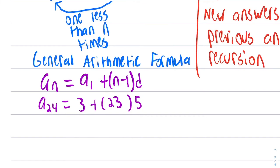And then we can simplify this. A24 will equal 3 plus 5 times 20 is 100. 5 times 3 is 15. Add those together, you get 115. Add those two things together, 3 and 115, and you get 118.